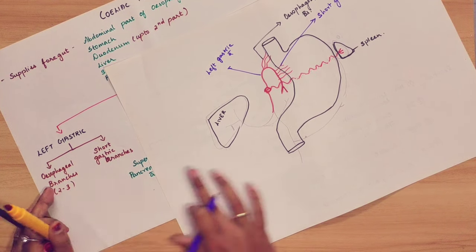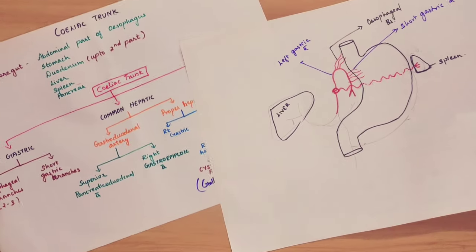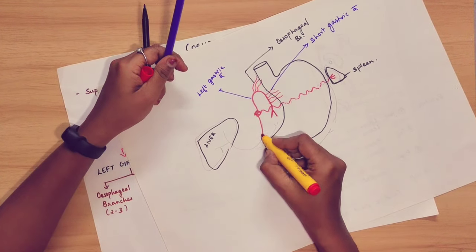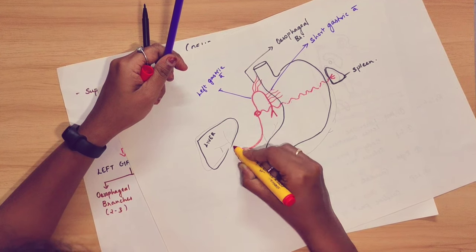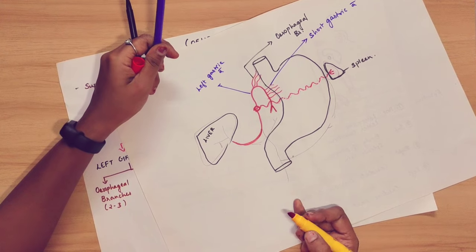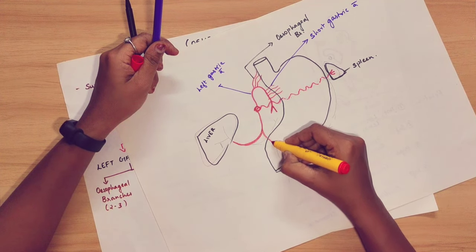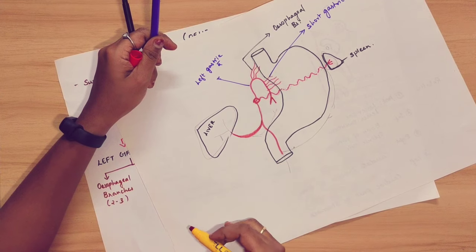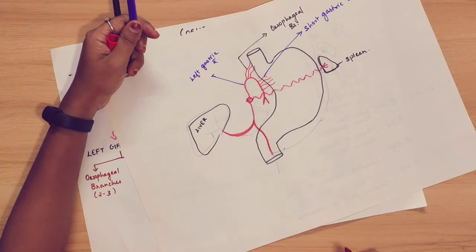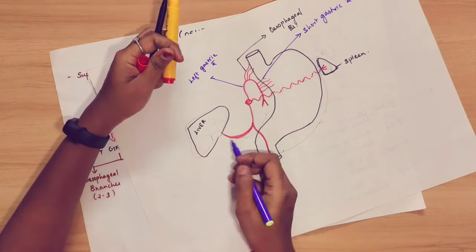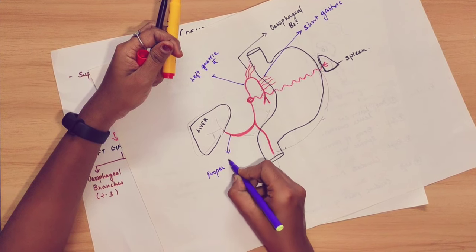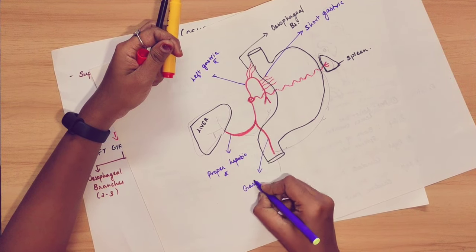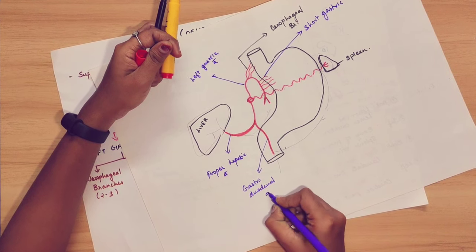Now coming to the next artery, that is the common hepatic artery. The common hepatic artery is divided into two parts: one is the proper hepatic artery going to the liver, and one is the gastroduodenal artery. This is labeled here in the diagram.